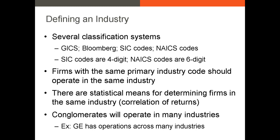There are other ways besides a firm being assigned or selecting a NAICS code to identify which industry it's in. A very popular way is by calculating the correlation between the firm's returns and the returns of other firms. If we identify that Starbucks' returns are highly correlated with McDonald's returns, and we know that McDonald's is in the restaurant industry, then we can reasonably conclude that Starbucks is very likely in the restaurant industry — because a lot of the drivers of its returns are similar to those of McDonald's.